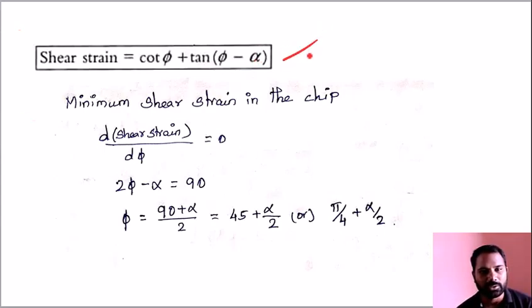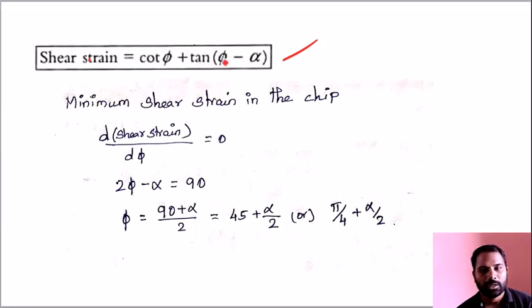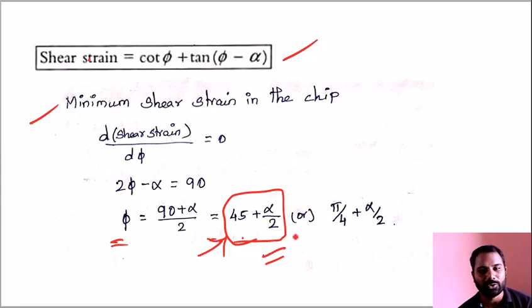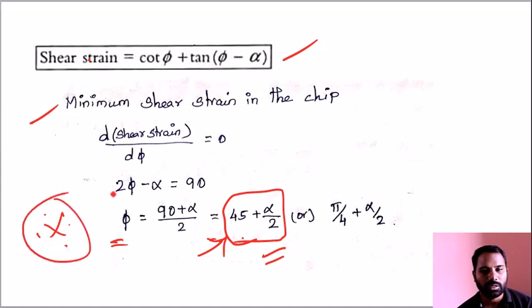To find the minimum shear strain in the chip, we differentiate the shear strain with respect to φ and set it equal to zero. Doing so gives φ equals 45 degrees plus α divided by 2. This is an important condition. We can also write this as π/4 plus α/2.